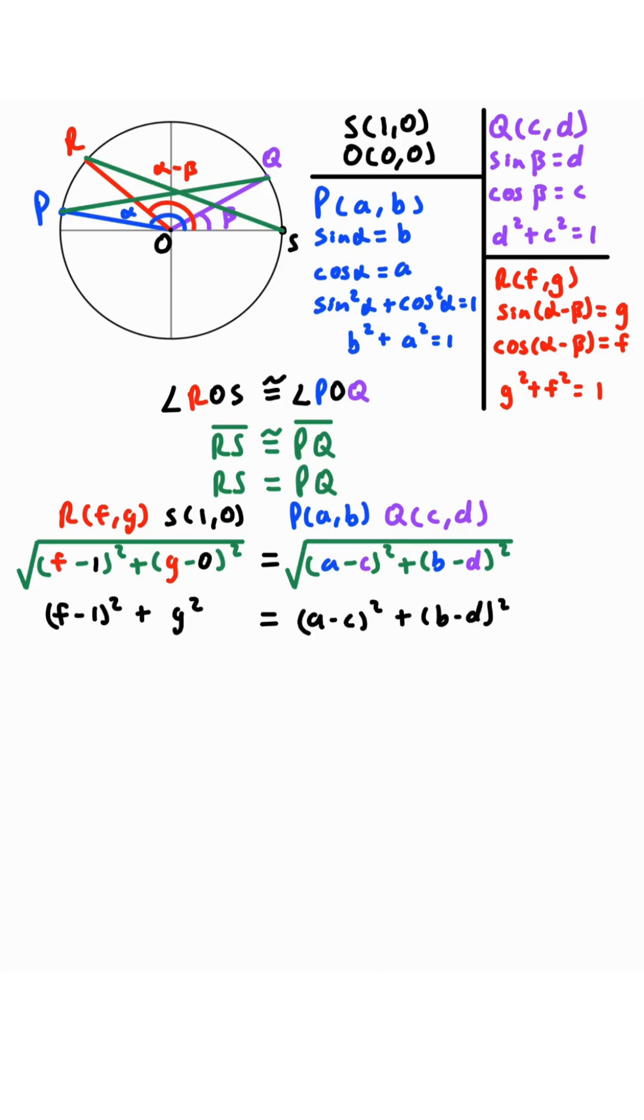We're going to square both sides and then simplify g minus 0 to be g. Now, f minus 1 quantity squared is f squared minus 2f plus 1. g squared is just g squared. a minus c quantity squared is a squared minus 2ac plus c squared. b minus d quantity squared is b squared minus 2bd plus d squared. Now, we'll notice all these highlighted parts. We have that f squared plus g squared is equal to 1, a squared plus b squared is equal to 1, and c squared plus d squared is equal to 1.